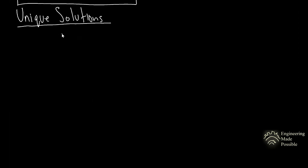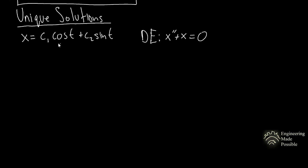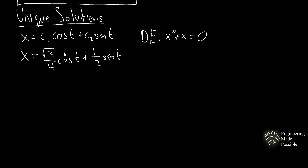Now let's discuss unique solutions using the previous example. The general family c₁ cos(t) + c₂ sin(t) is not a unique solution because c₁ and c₂ can be any constants. The unique solution was x = (√3/4) cos(t) + (1/4) sin(t), valid specifically for the initial conditions at t = π/6, x = 1/2. That is a unique solution for the differential equation at those specific points.